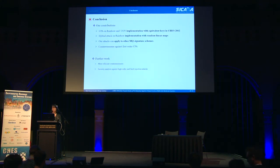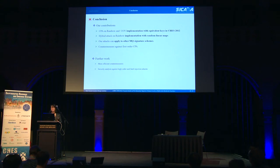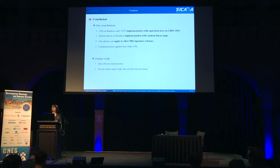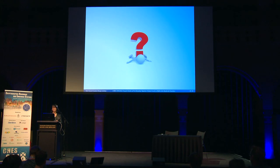This is the conclusion. We propose CPA on Rainbow and UOV with equivalent key in chess form, and we also propose a hybrid attack on Rainbow implementation with random linear maps using CPA and algebraic key recovery attacks. Our attack can apply to other MQ signature schemes, and we propose a simple countermeasure against first-order CPA. We will work on more efficient countermeasures and security analysis against higher-order and fault-injection attacks. That's it. Thank you for your attention.